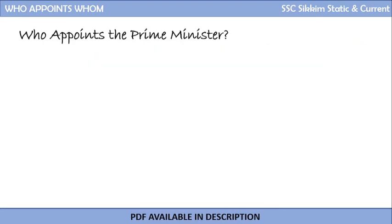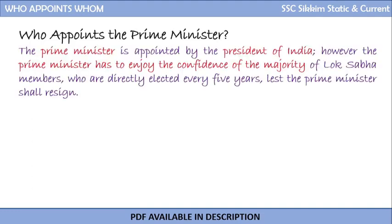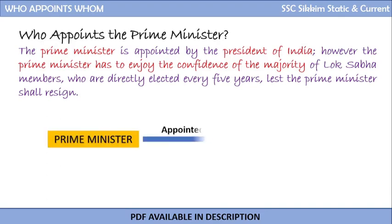Who appoints the prime minister of the country? The correct answer is that the prime minister is appointed by the President of India. Of course, the prime minister has to enjoy the confidence of the majority of the Lok Sabha members, who are directly elected every five years, otherwise the prime minister shall resign. But the prime minister is appointed by the President of India.